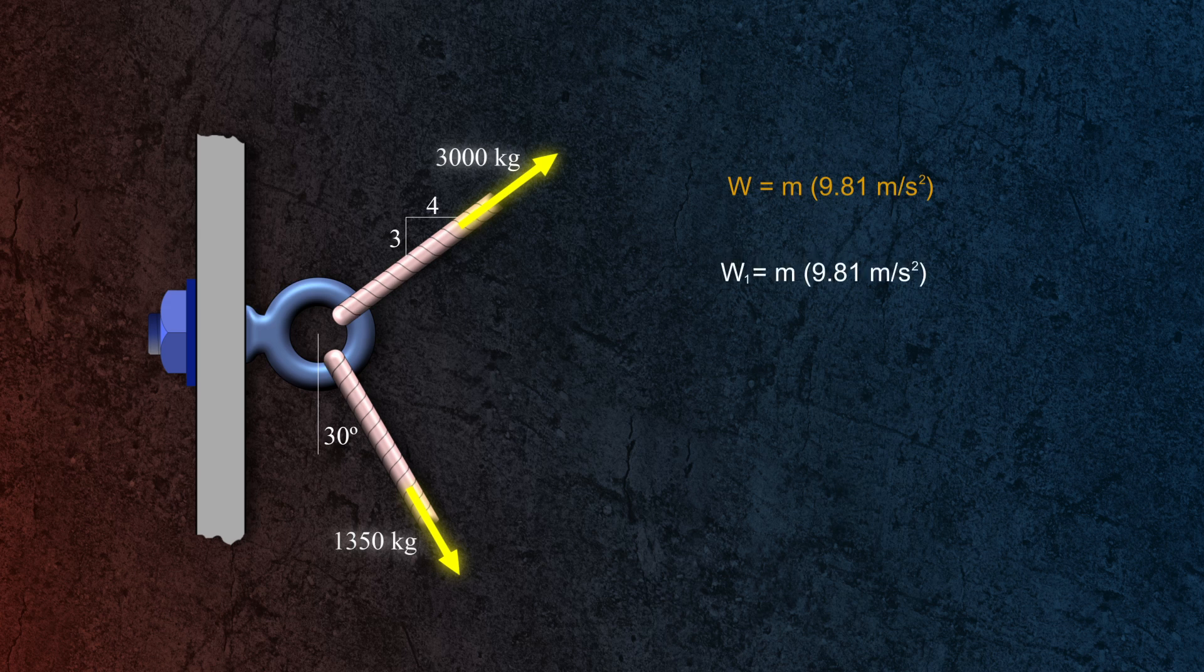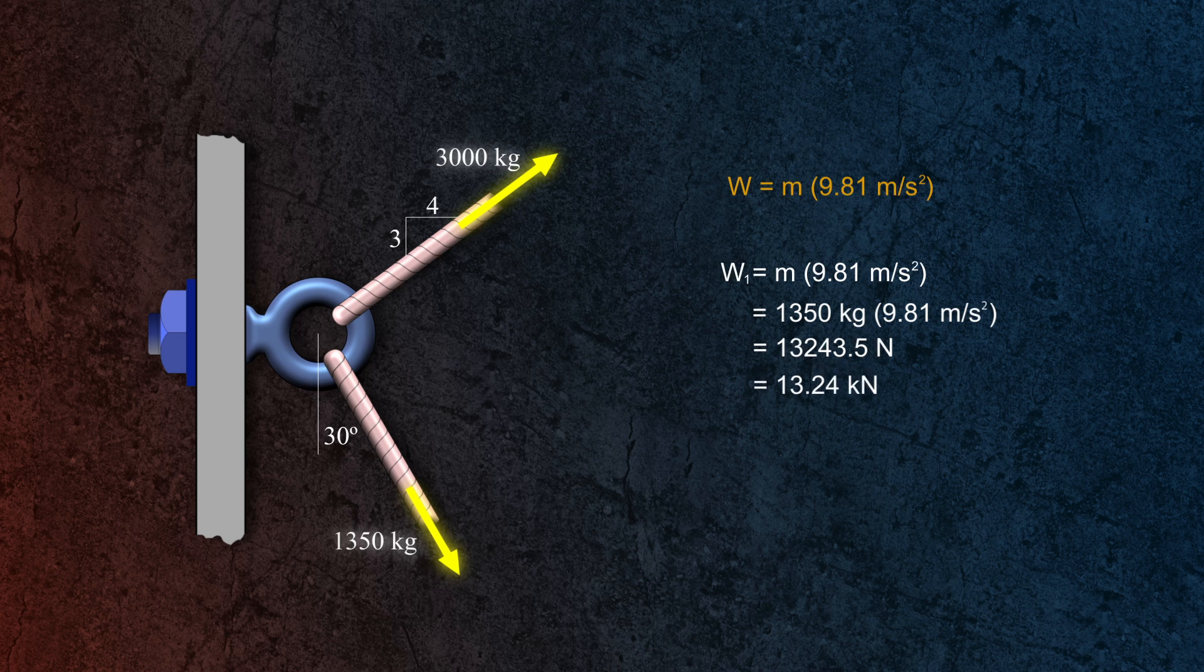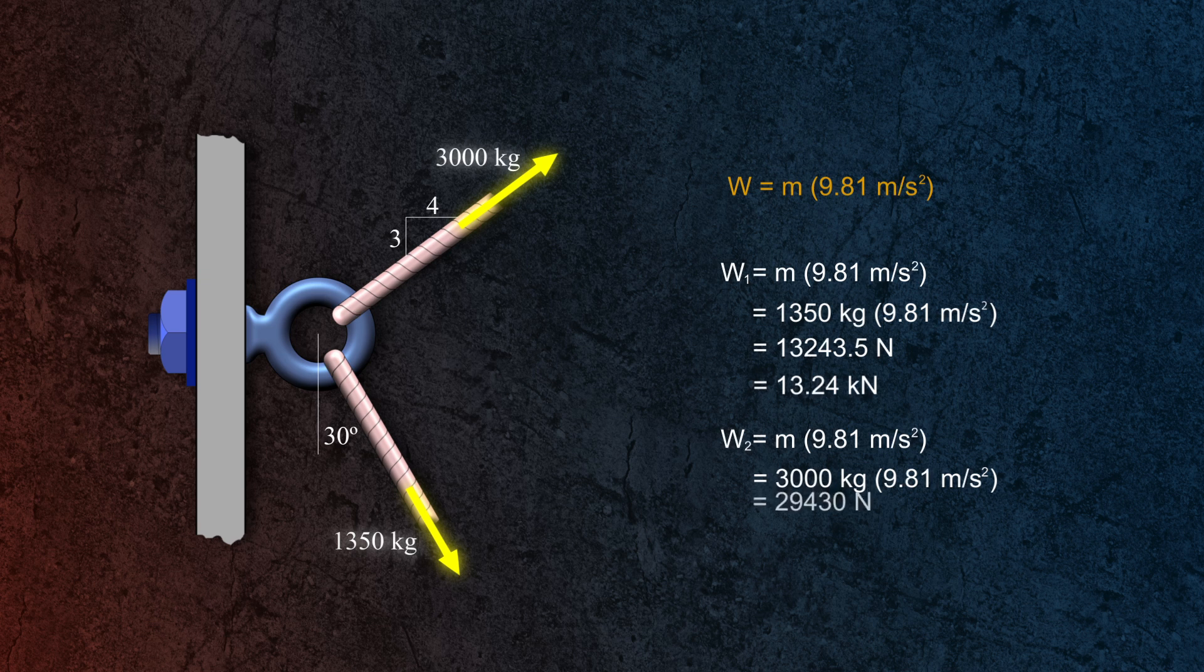So for the first rope, the weight equals 1350 kg times 9.81 meter per second squared, which is equal to 13.24 kN. And for the second rope, weight equals 3000 kg times 9.81 meter per second squared, which is equal to 29,430 N or 29.43 kN.